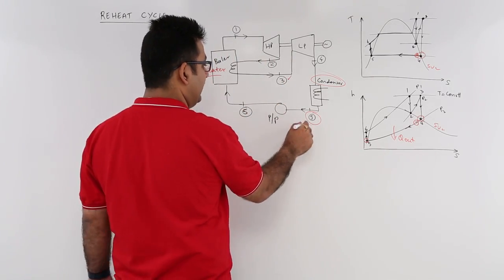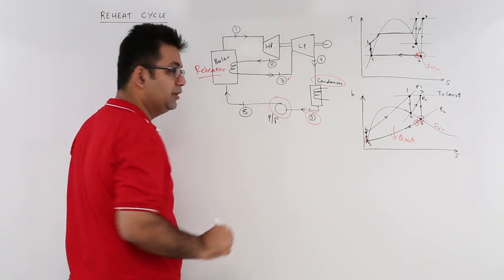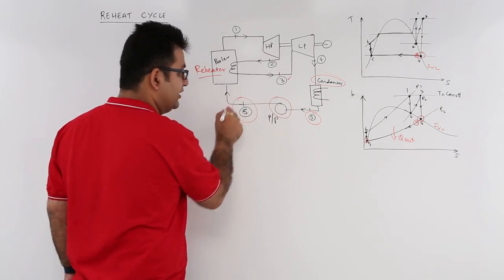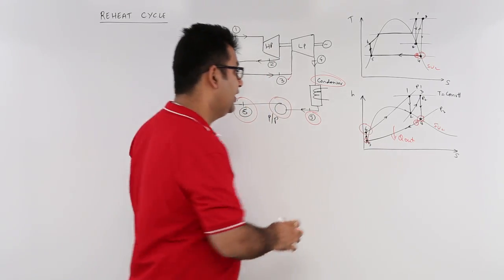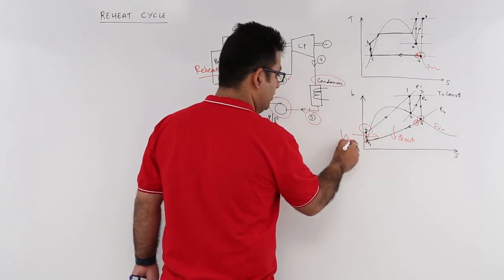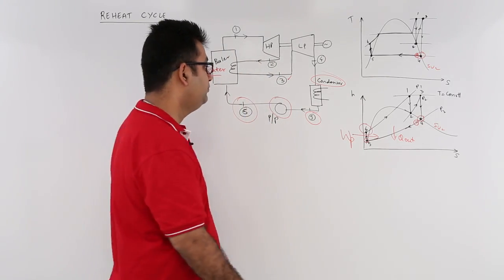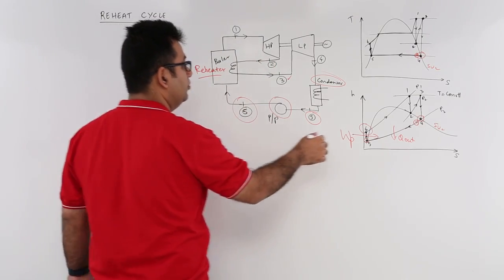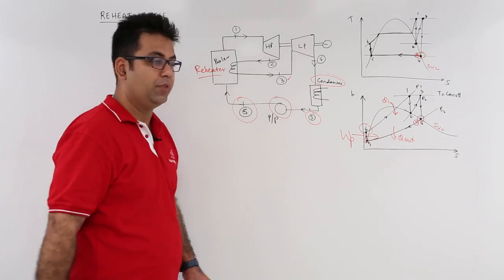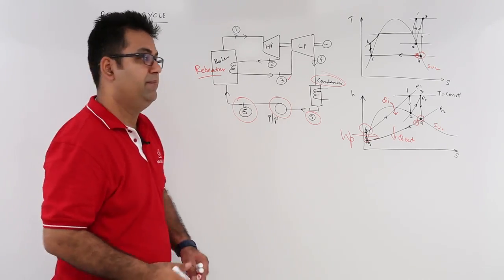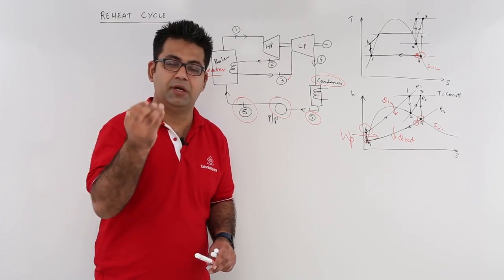From saturated liquid at state 5, we pump it and come to state 6, which is the entrance to the boiler. In this particular region we put some pump work into it. Then from 6 to 1, you provide some heat input.